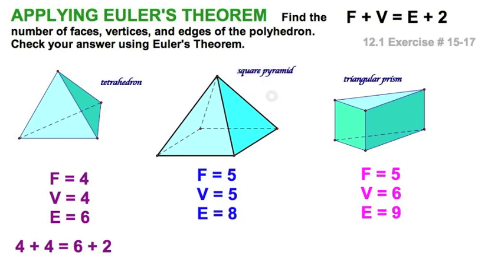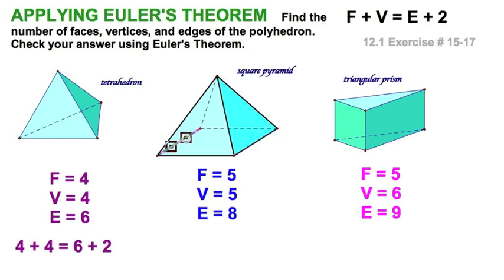The square pyramid: we have two triangular faces visible and two in the background — four triangular faces — plus the square base, that's five faces. Four vertices on the bottom and one on top gives five vertices. Four edges on the bottom and four leading up to the top vertex gives eight edges. Five plus five equals eight plus two — it also obeys Euler's theorem.